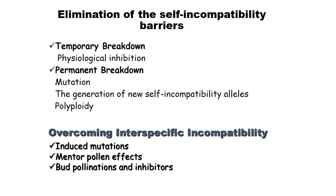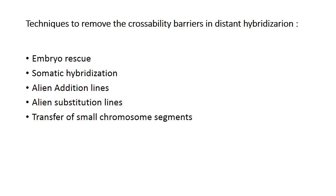To overcome interspecific incompatibility, the methods are induced mutation, mentor pollen effects, bud pollination, and inhibitors. Techniques to remove crossability barriers in distant hybridization are: embryo rescue, somatic hybridization, alien addition lines, alien substitution lines, and transfer of small chromosome segments.